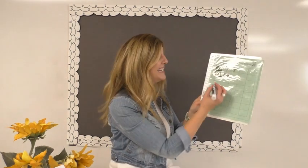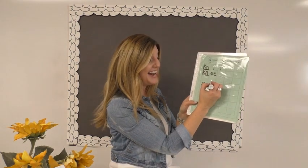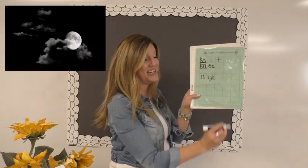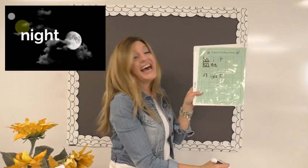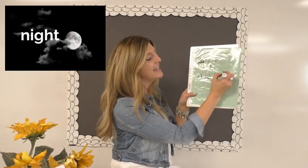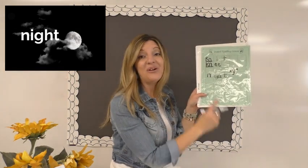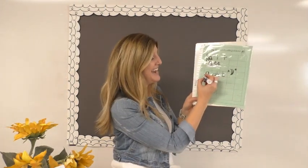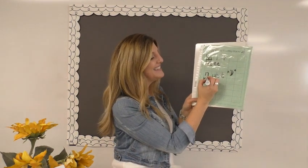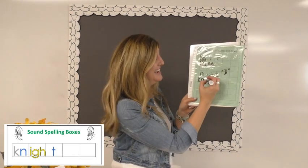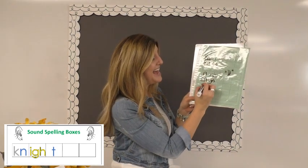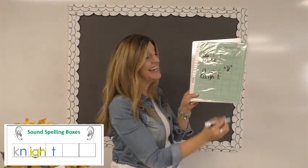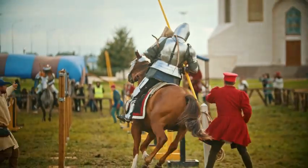Let's do one more — the word 'night.' This word can be spelled N-I-G-H with the IGH vowel team, then T — night. This is the night like the time of day. But we have a homophone — and this 'knight' uses our silent digraph K-N. When I have K-N-I-G-H-T, this is a knight, like a knight in shining armor.